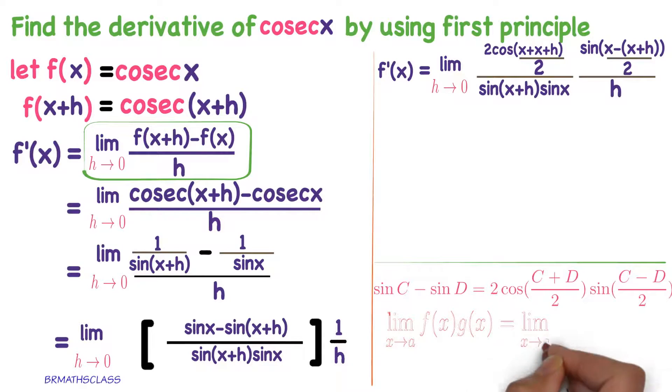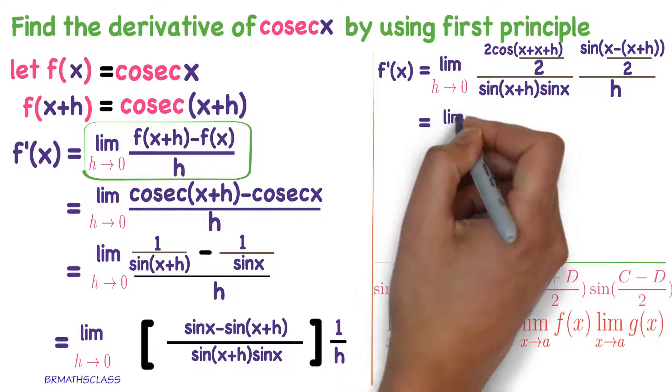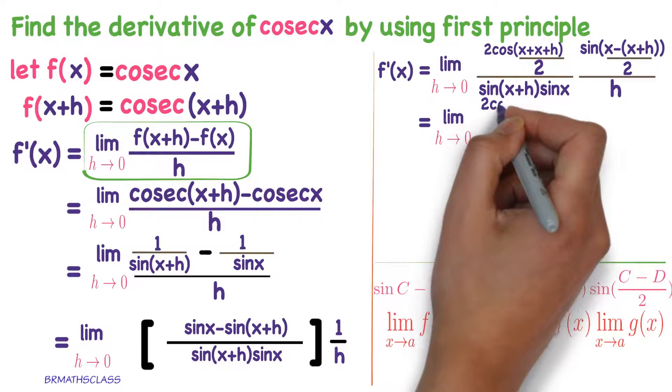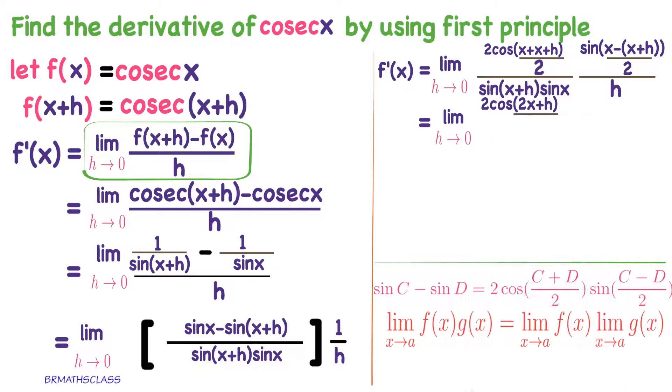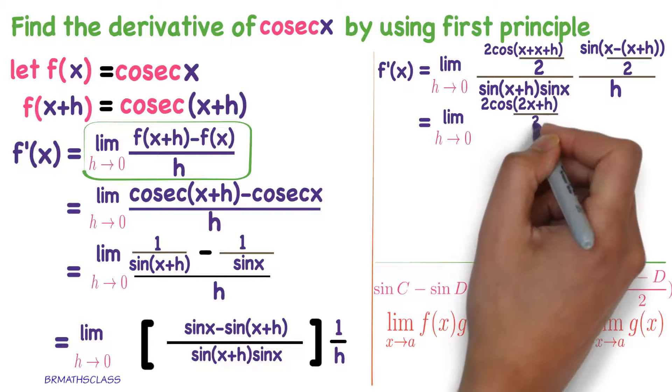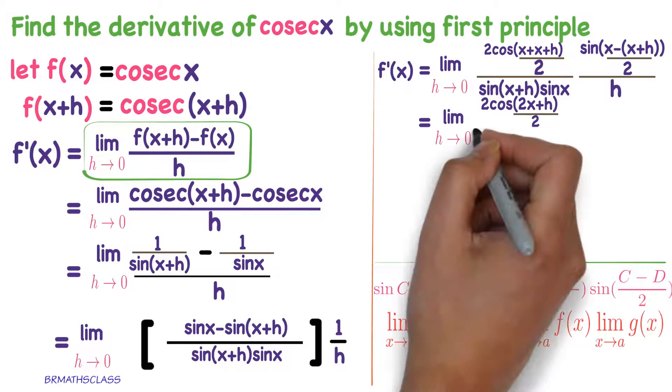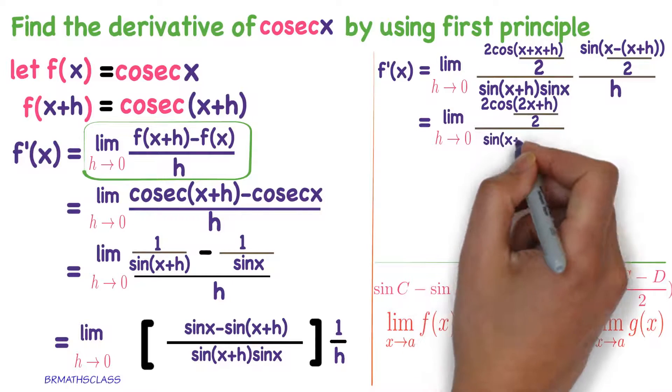We know this formula. Limit x tends to a, f of x into g of x equals limit x tends to a f of x into limit x tends to a g of x. Apply this formula here. So, limit h tends to 0, 2 cos x plus x is 2x, 2x plus h divided by 2, whole divided by sin of x plus h into sin x.